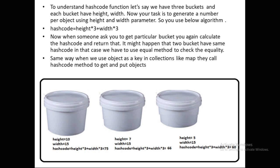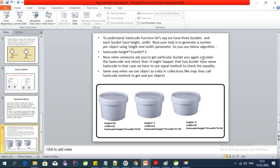Whenever you get a bucket you calculate a hash code, and whenever you pass that bucket again you calculate the hash code and retrieve that particular bucket to provide to someone. In this way it generates a key which can be encoded and provided — the same way collections like HashMap call the hashCode method to get and put objects.